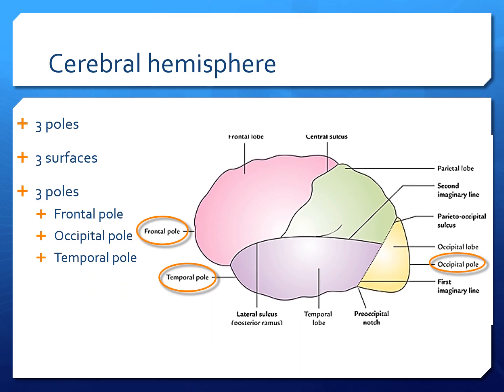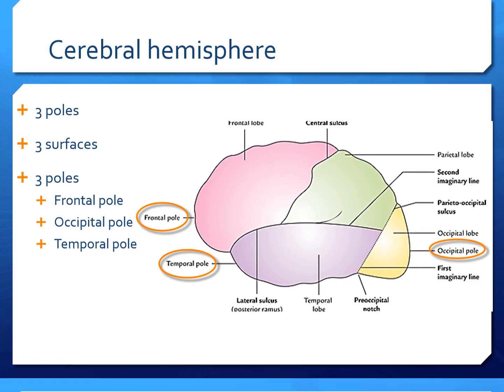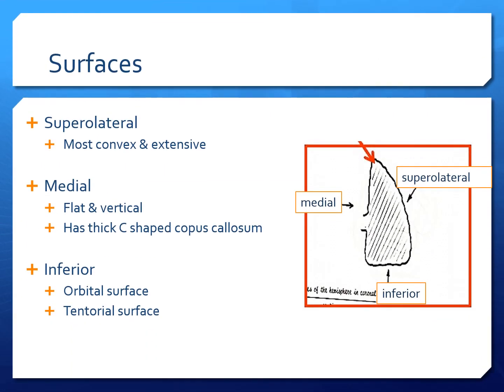The cerebral hemisphere has got three poles and three surfaces. The anterior one is a frontal pole which appears rounded. The posterior occipital pole appears pointed, and there is a temporal pole. The three surfaces are superolateral, inferior, and medial.